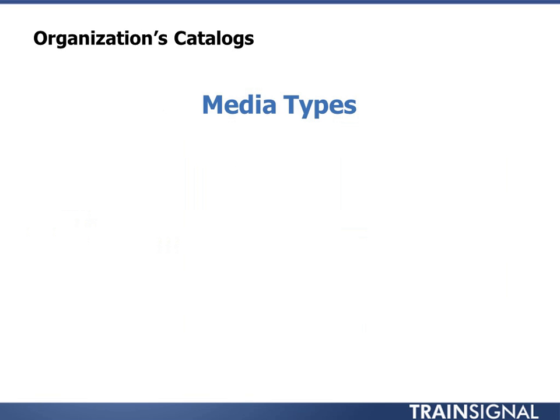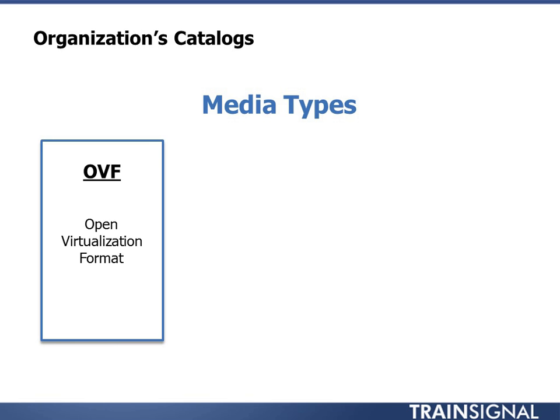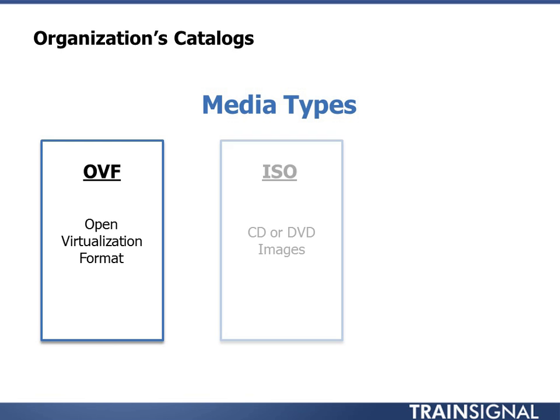Someone could take a virtual machine with Windows installed, insert that Exchange DVD virtually, and install the application — so they can customize their own virtual machines. The three main media types you can import are: Open Virtualization Format, which covers the vApp perspective but can also be provided as media so people can build their own vApps and include an OVF inside. The second is an ISO — just a CD or DVD image — which you can provide to other people so they can install applications or services.